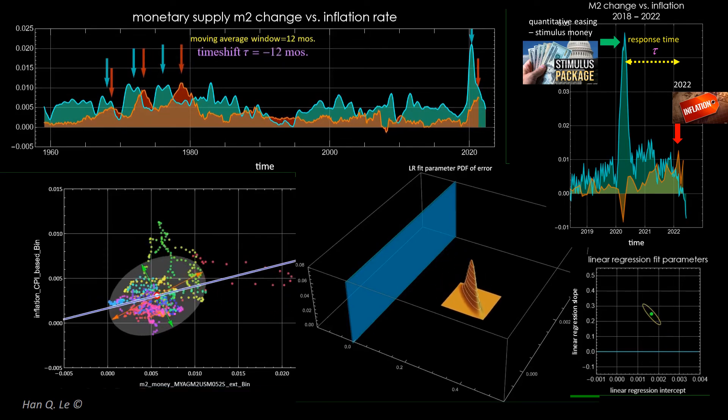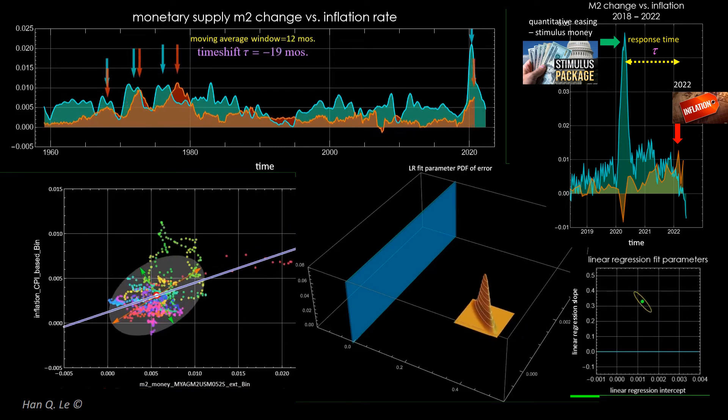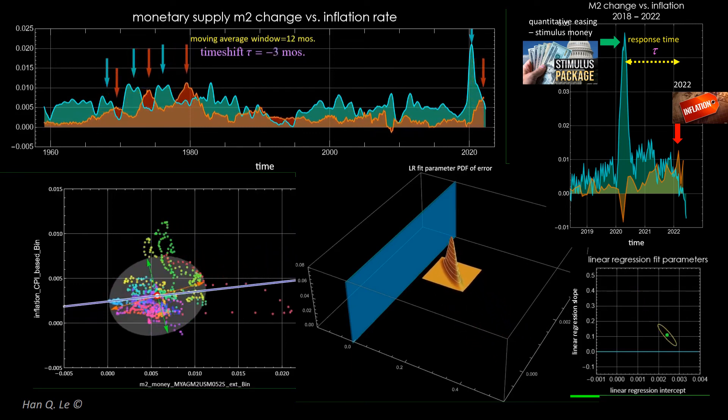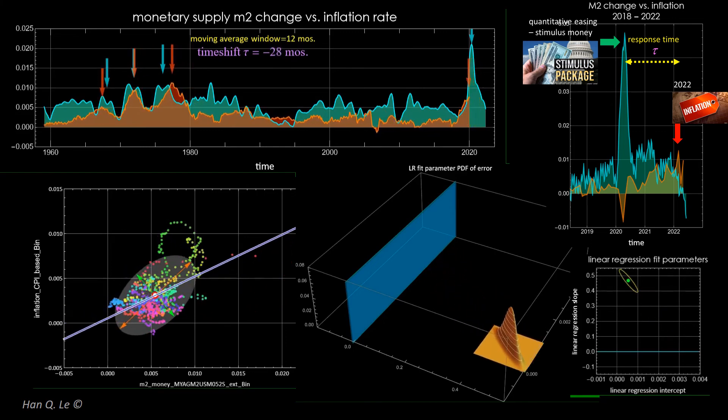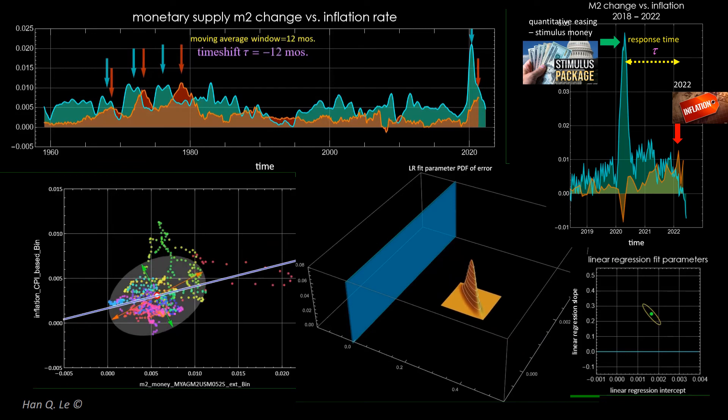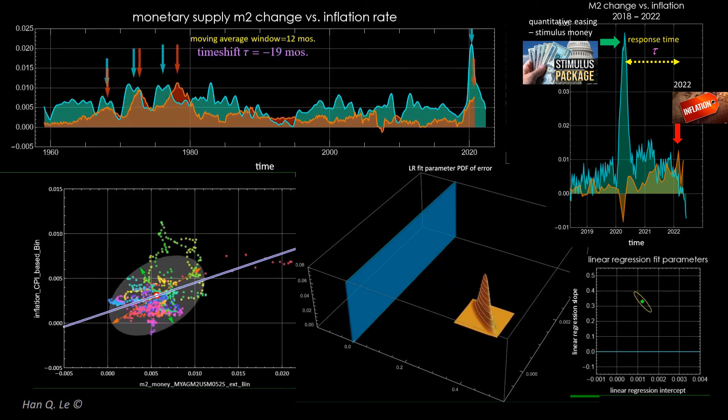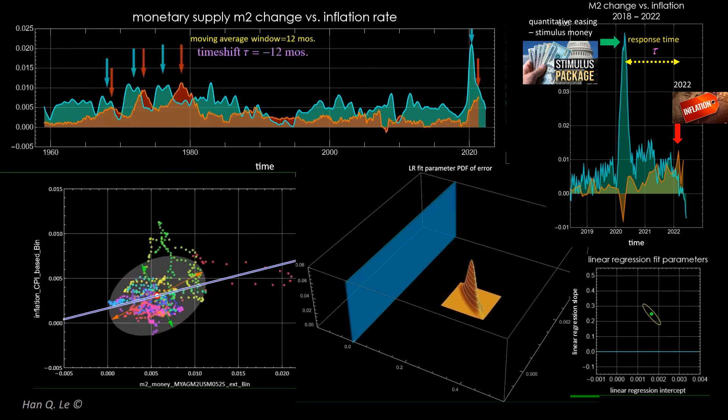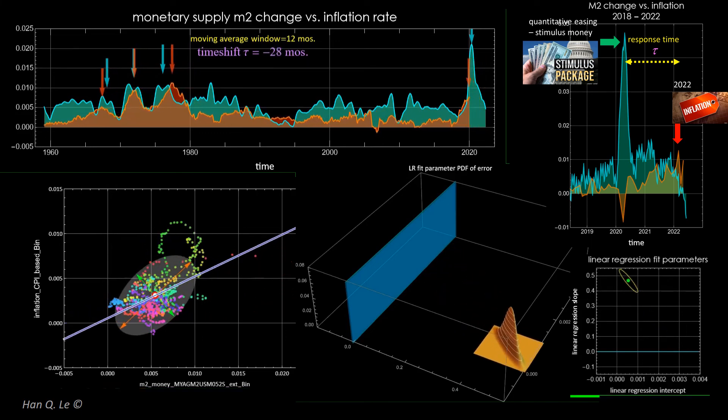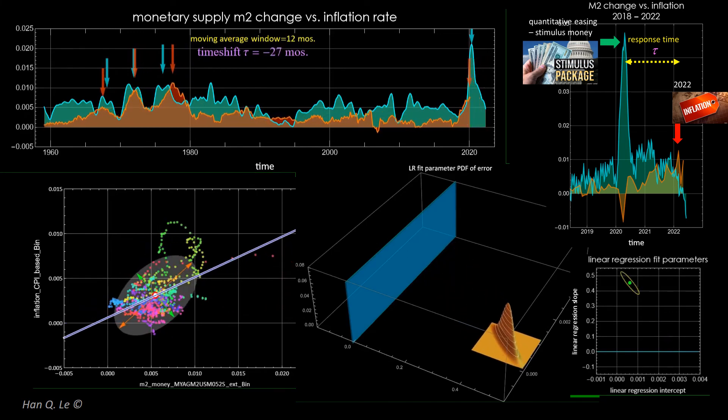It is evident that for a time shift around 20 to 30 months, the positive correlation between M2 change and inflation is statistically significant. The slope parameter error probability distribution function, as shown in both 2D and 3D charts, is quite distanced from zero. It means that the correlation between M2 change and inflation for this range of time shift is beyond any pure random coincidence.